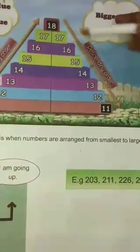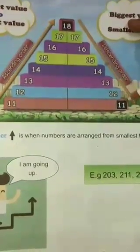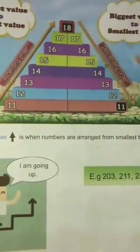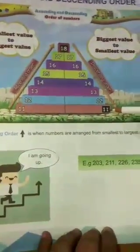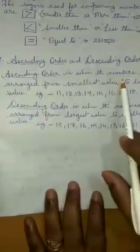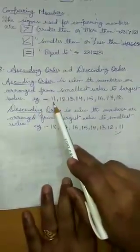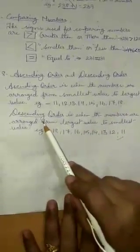Again, we have the descending order. From 18 to 11, we are going down 18, 17, 16, 15, 14, 13, 12, 11. Biggest value 18 to the smallest value 11. Ascending order is when the numbers are arranged from smallest value to largest value. Descending order is when the numbers are arranged from the largest value to smallest value.